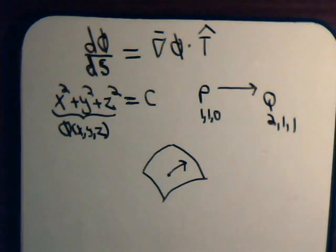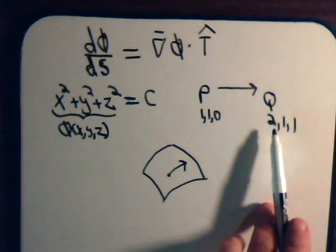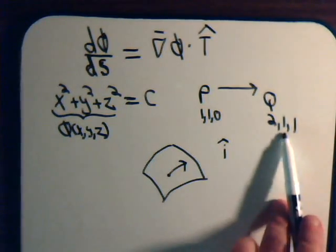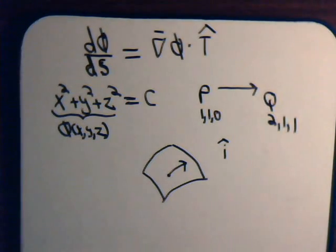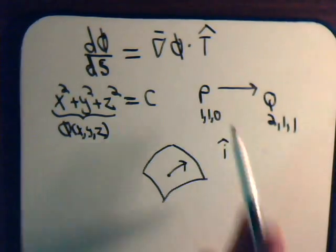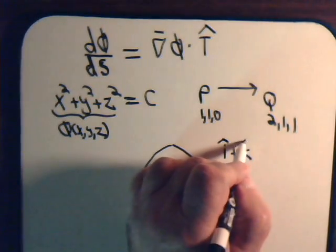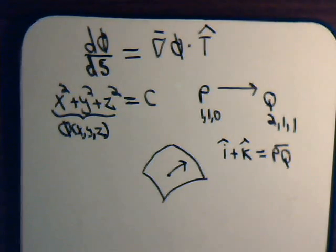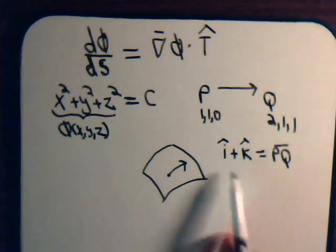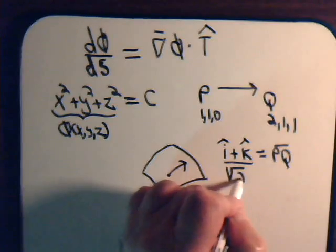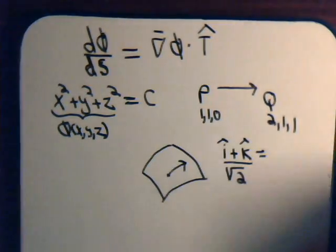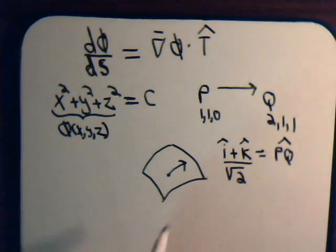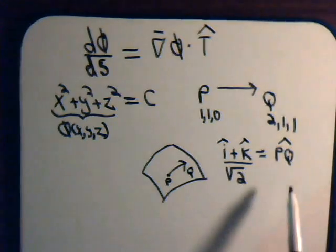What would be that vector? So the i component of that vector would be 2 minus 1, that's i. The j component would be 1 minus 1, that's 0. The k component would be 1 minus 0, that's 1. So that's the vector pq. And the unit vector pq would be this divided by the square root of 2. So the unit vector pq has this expression.